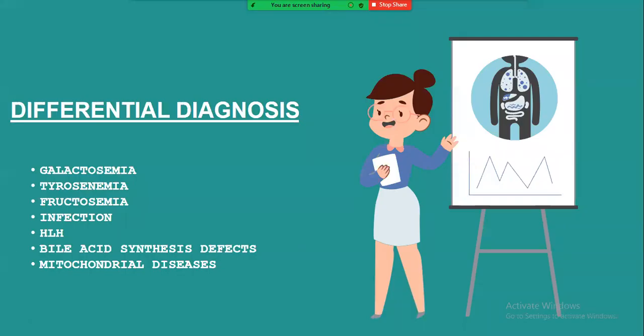Differentials of neonatal hemochromatosis/GALD include galactosemia, tyrosinemia, fructosemia, infection, sepsis, HLH, and mitochondrial diseases.